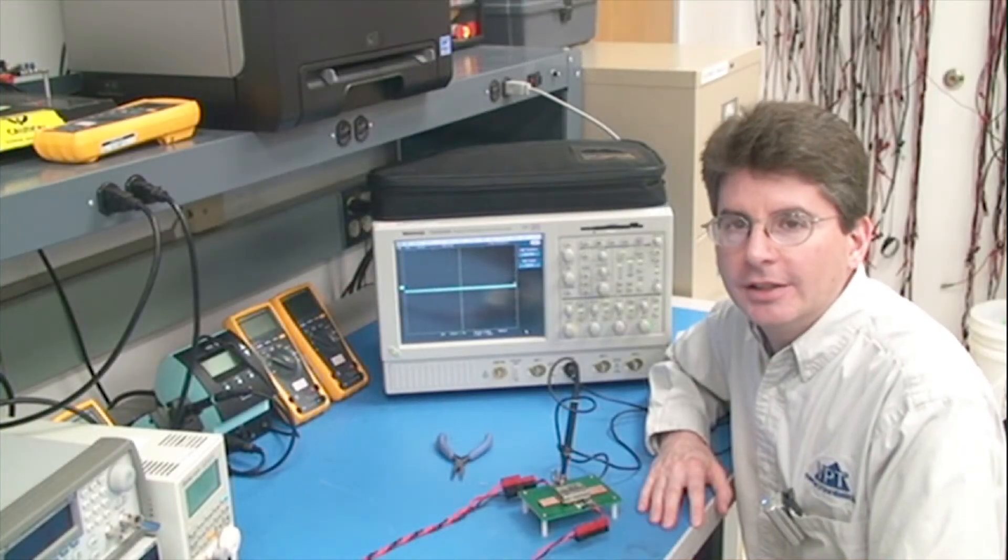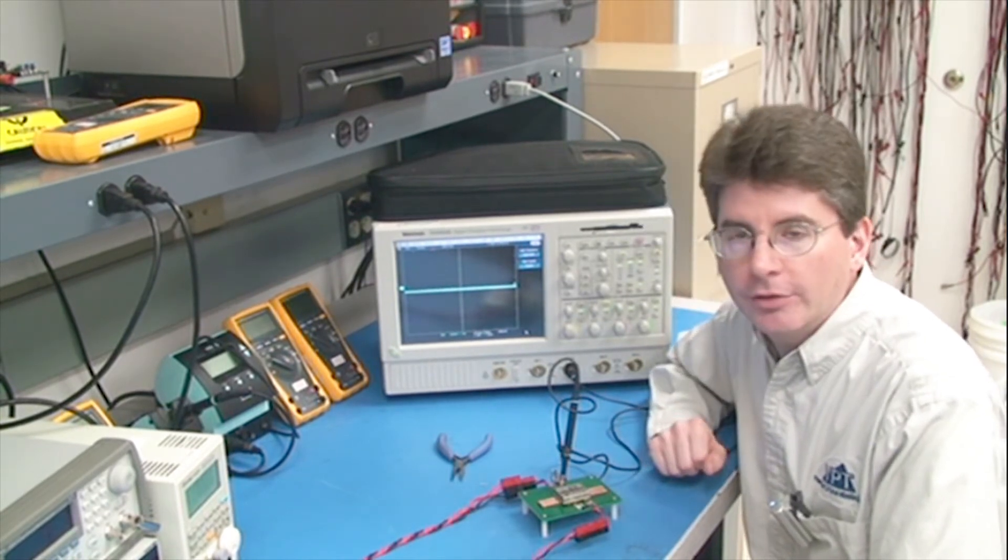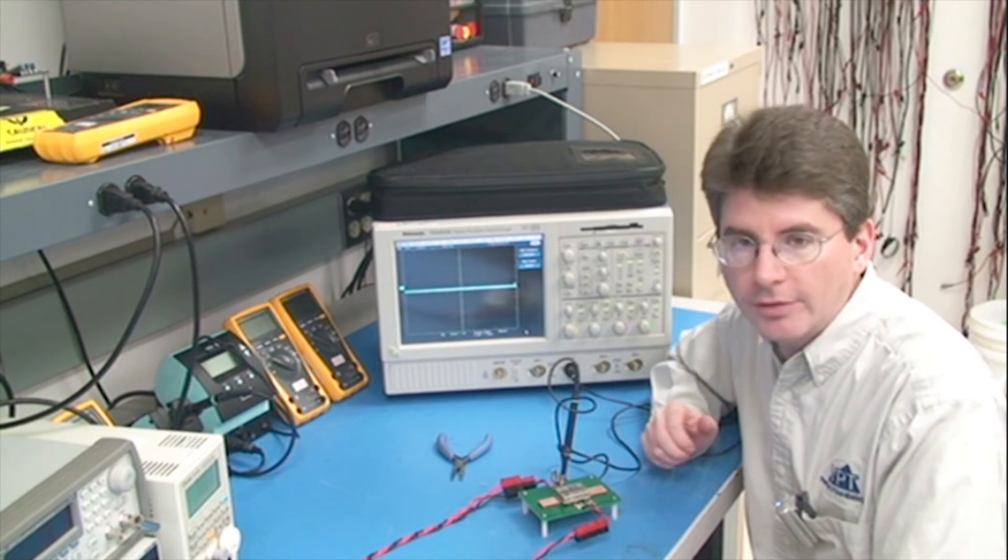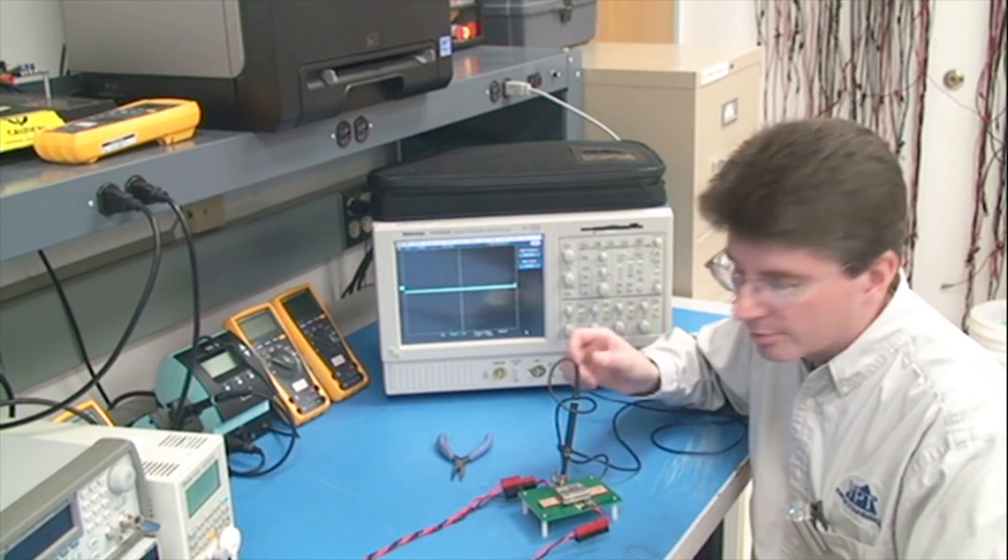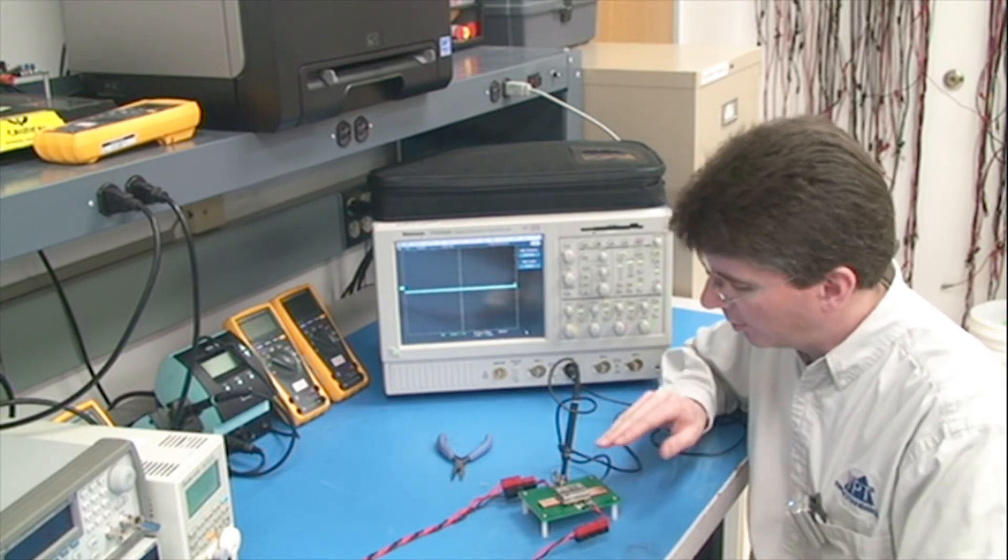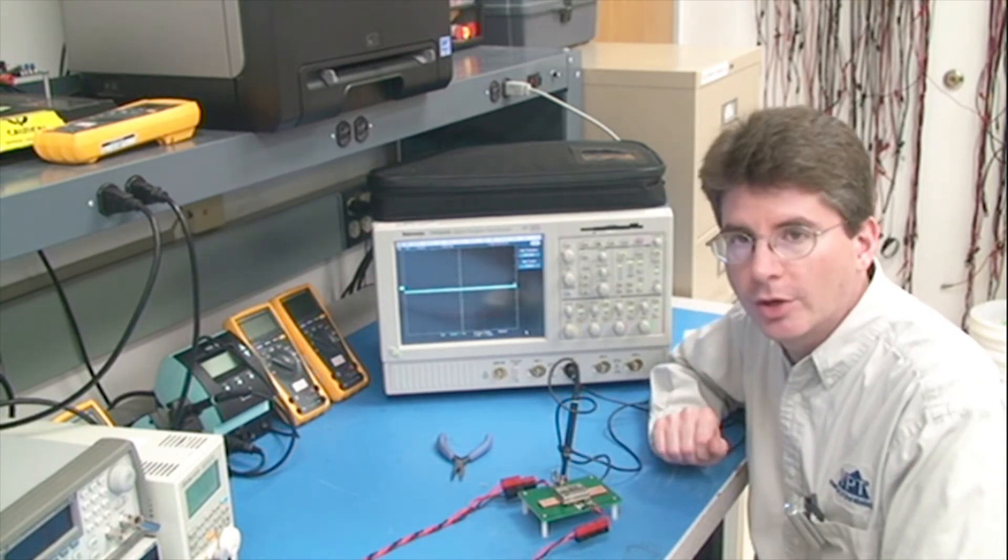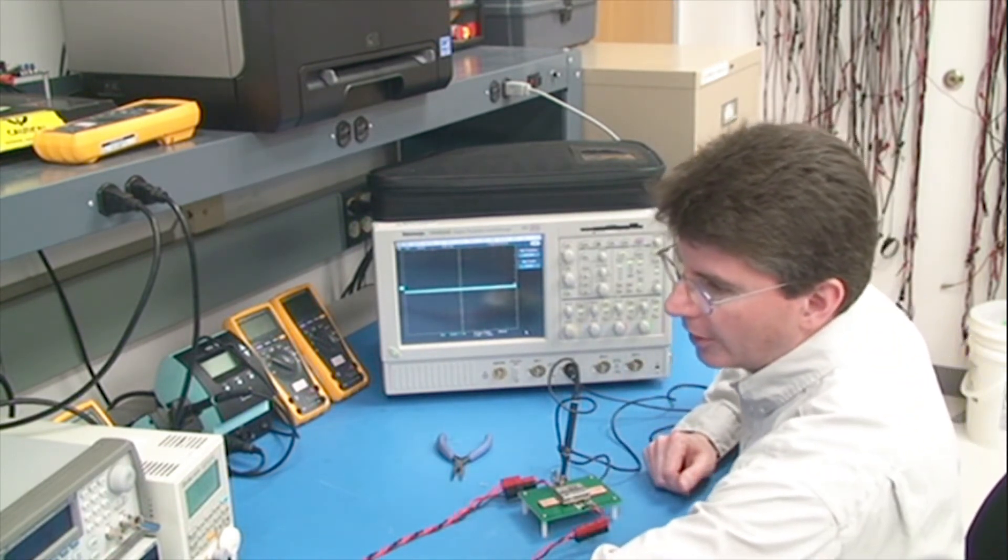Now we'll take a look at the output ripple here in the lab. This is the DVHF 2805S DC-DC converter. It's 15 watts, 5 volts at 3 amp output. The setup here is measuring the output ripple simply with an oscilloscope probe. We've removed the ground clip and we've plugged the probe directly into a sine socket at the output of the converter. Now let me turn the converter on.